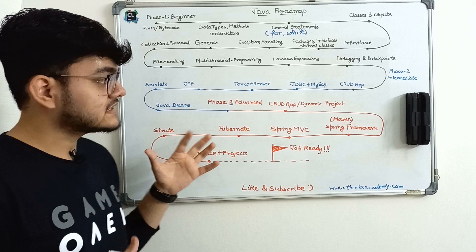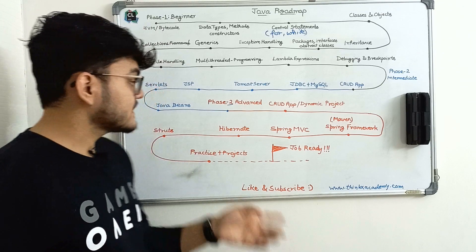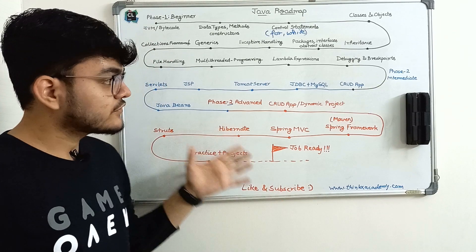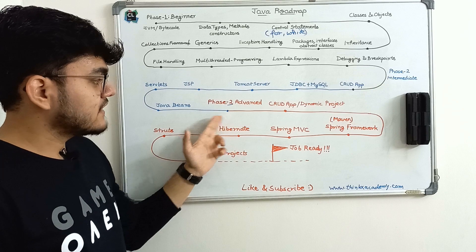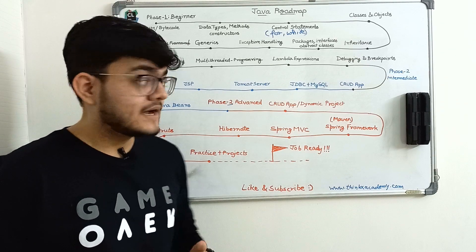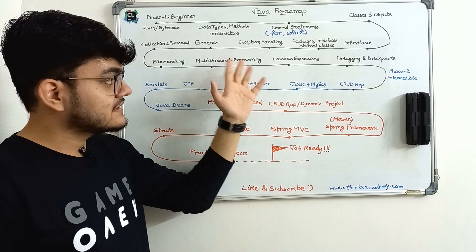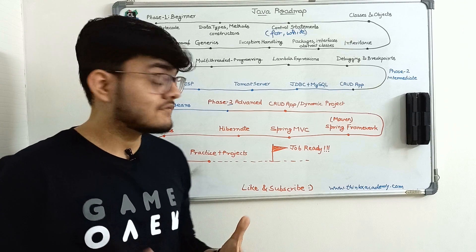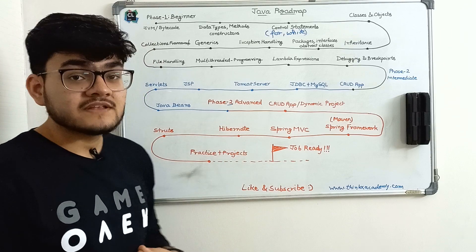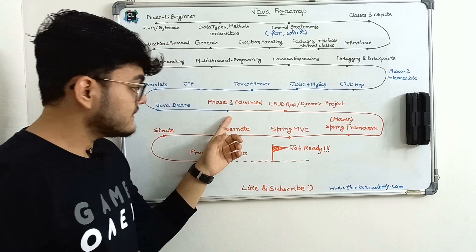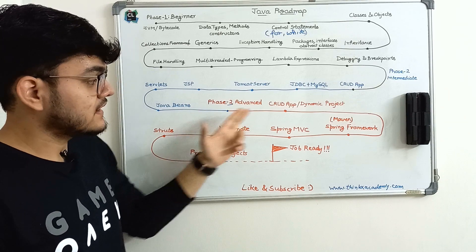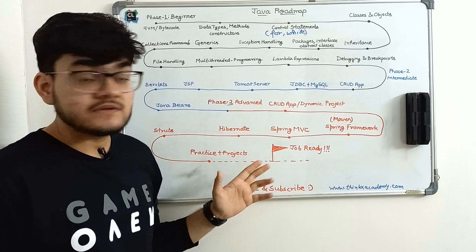But remember, if you want a job as a Java developer, having completed up to phase two is not even enough. In most companies, when you apply, you will see that they cover these two phases in just one single line — 'Java basics and OOP concepts.' These are considered just the basics, and companies do not hire developers based only on knowledge of these two phases. So let's move on to the last phase, which is phase three. This phase is very important, and most developers will struggle here because this is advanced Java.